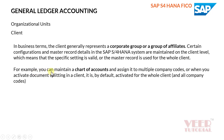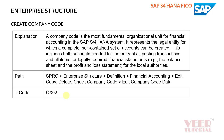For example, you can maintain a chart of accounts and assign it to multiple company codes. When you activate document splitting in the client, it is by default activated for the whole client and all company codes. There are certain settings applicable to the complete client and all company codes, while some settings apply only to particular company codes, which will be explained in upcoming videos.